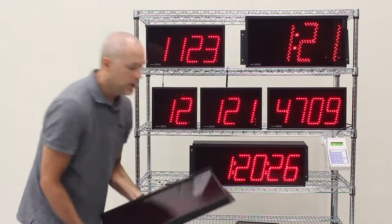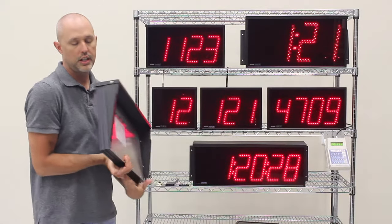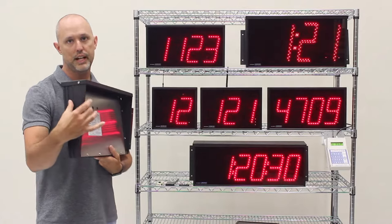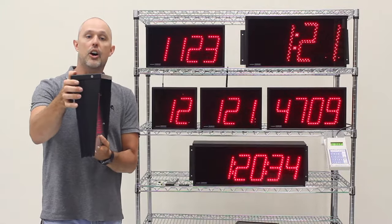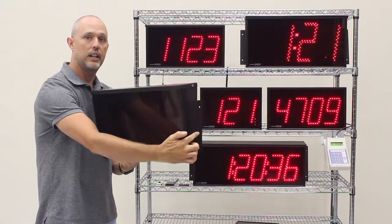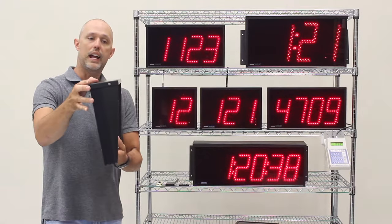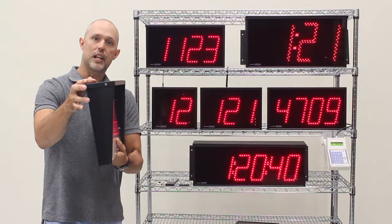Optionally you can purchase tilt mount brackets which are just these brackets here on the side. Those are going to allow your display to hang on a wall using these fasten points and it will tilt your displays just slightly down.